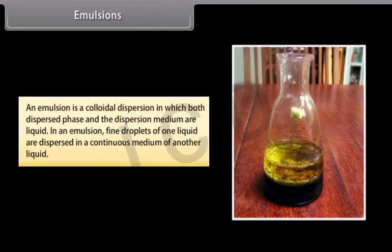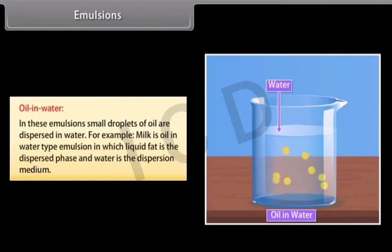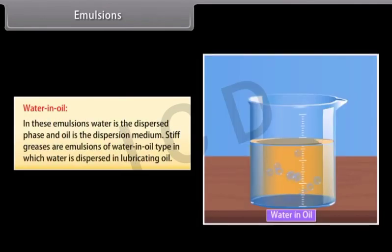An emulsion is a colloidal dispersion in which both the dispersed phase and the dispersion medium are liquid. Fine droplets of one liquid are dispersed in a continuous medium of another liquid. Emulsions are of two types: oil in water and water in oil. In oil-in-water emulsions, droplets of oil are dispersed in water; for example, milk is an oil-in-water emulsion in which liquid fat is the dispersed phase and water is the dispersion medium. In water-in-oil emulsions, water is the dispersed phase and oil is the dispersion medium; stiff greases are emulsions of water dispersed in lubricating oil.